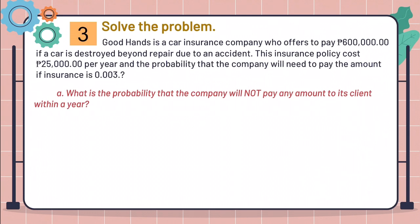Based on the problem, what is the probability that the company will not pay any amount to its client within a year? Since one of the properties of the discrete random variable is the sum of corresponding random probability should be equal to 1, we are going to subtract the given, which is 0.003 from 1, to get the probability that the company will not pay any amount, and that would be 0.997.